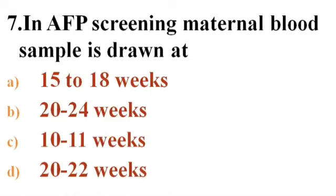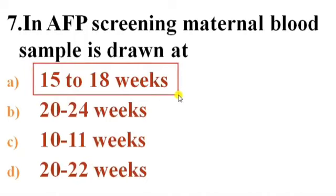Next question: In alpha-fetoprotein (AFP) screening, maternal blood sample is drawn at — Options: A) 15 to 18 weeks, B) 20 to 24 weeks, C) 10 to 11 weeks, D) 20 to 22 weeks. Answer is A — 15 to 18 weeks. If AFP is elevated, it indicates the fetus has spina bifida. A decreased level of AFP is seen in conditions like Down syndrome.